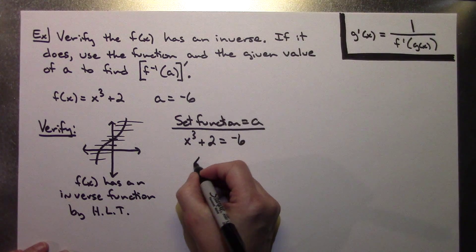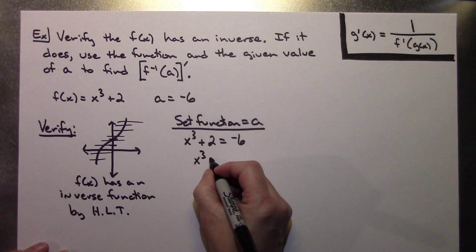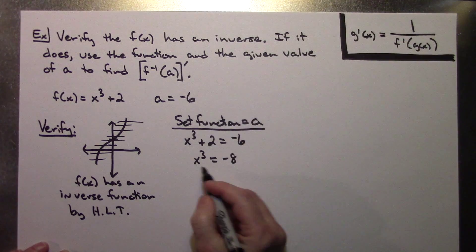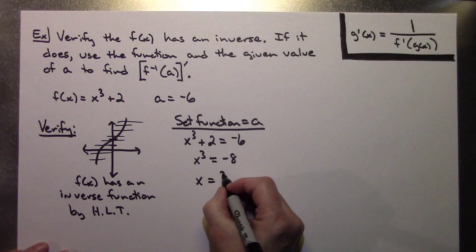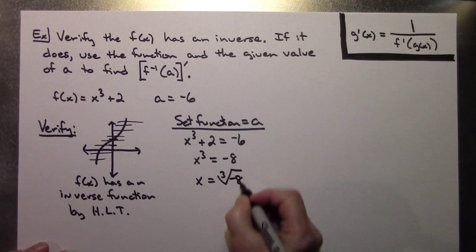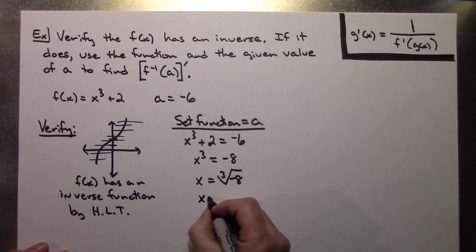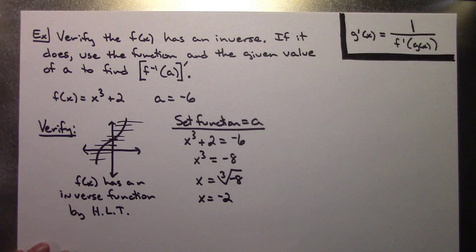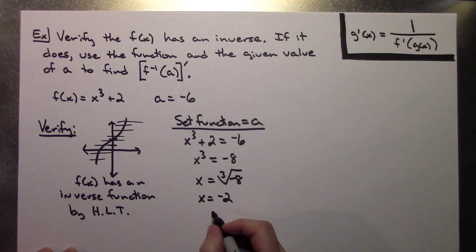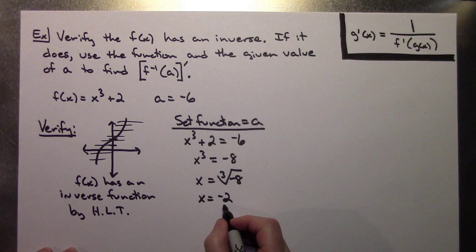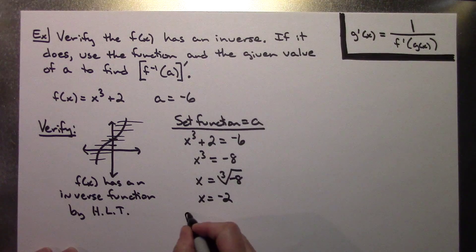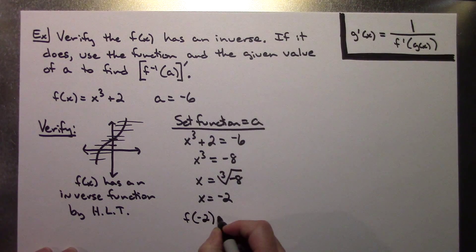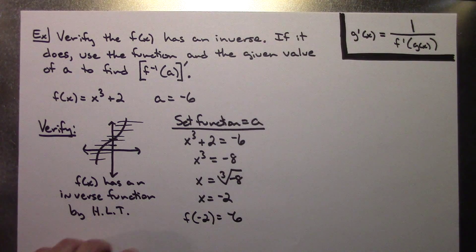I can take the cube root of both sides. x equals the cube root of negative 8, which gives me x equals negative 2. Now I know that if I plug negative 2 into this function I get negative 6. So I can write f of negative 2 equals negative 6.